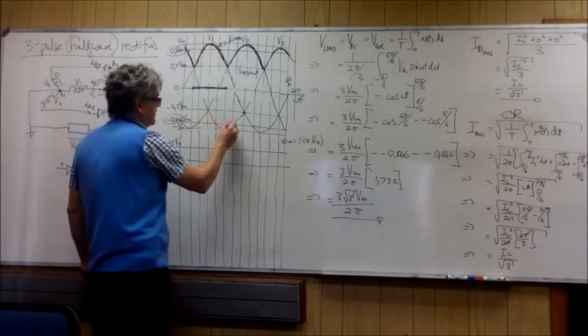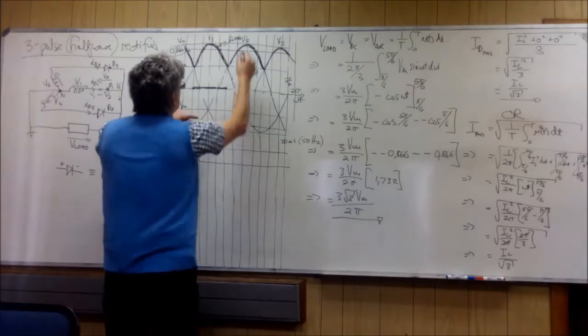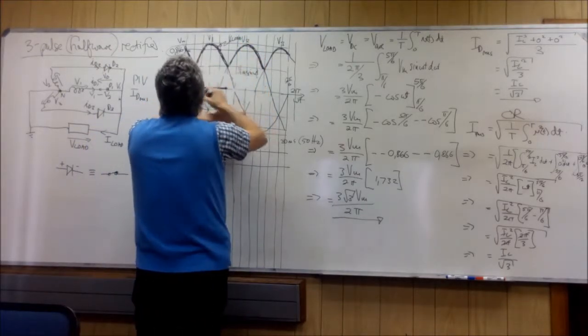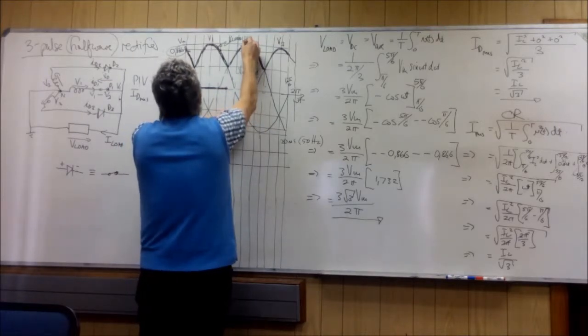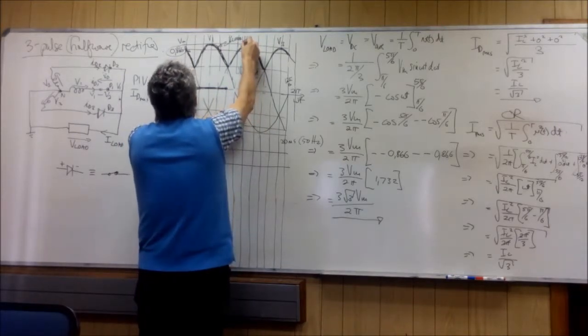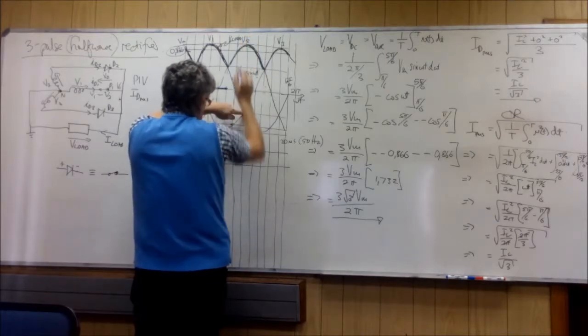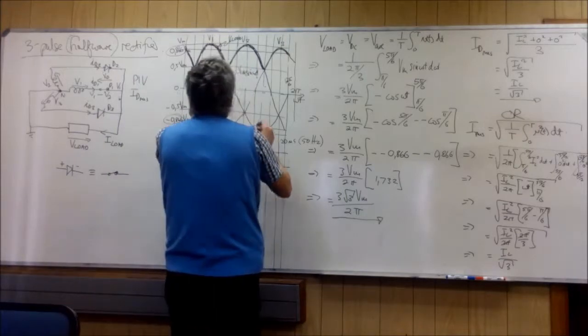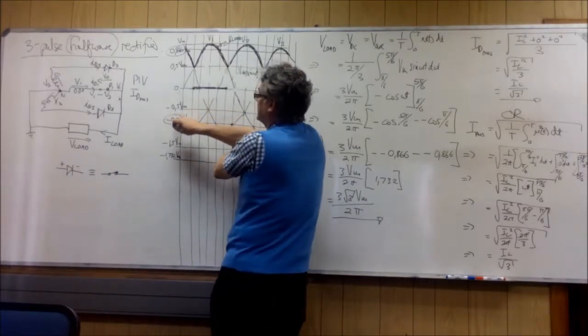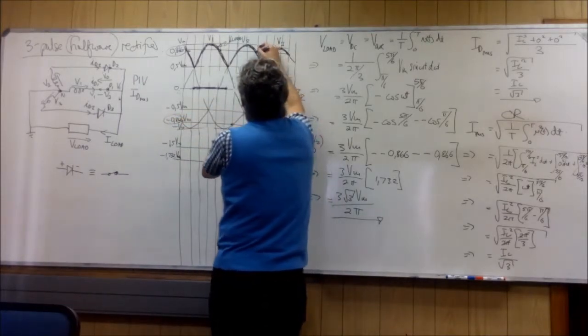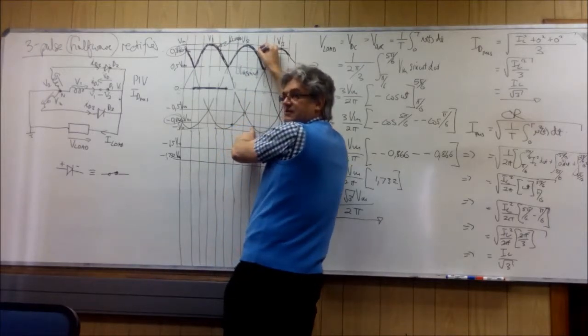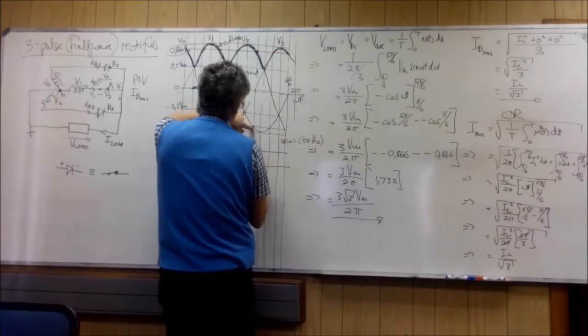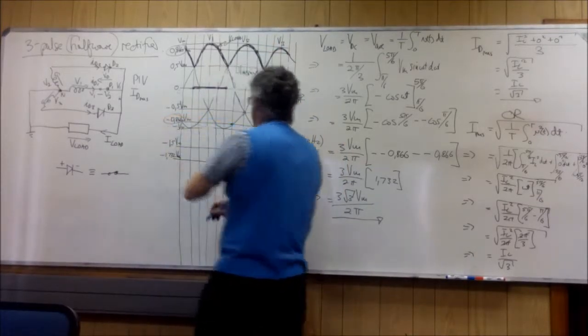So we've got a dot there. Now we go: V1 is minus 0.5, V2 is 1. Minus 0.5 minus 1 gives us minus 1.5. V1 is minus 0.66, V2 is 0.66. Minus 0.866 minus 0.866 gives me minus 1.732.